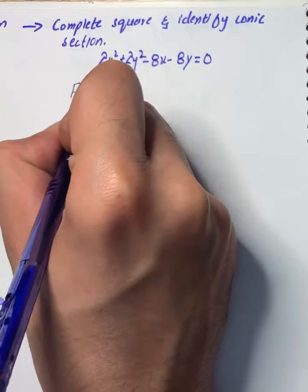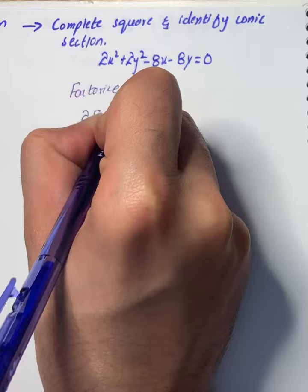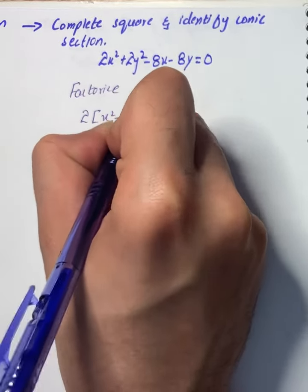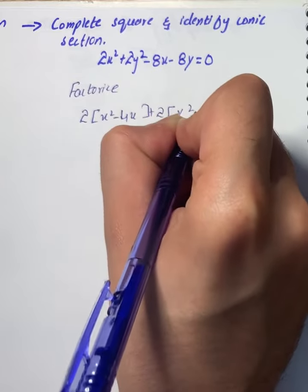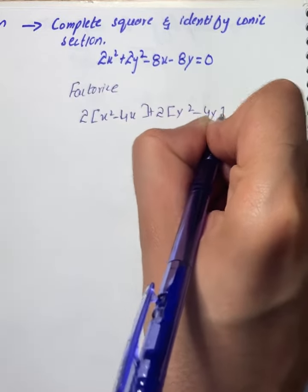I will be taking common 2 into x² - 4x plus 2 into y² - 4y equals to 0.